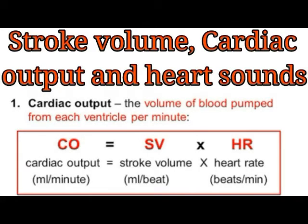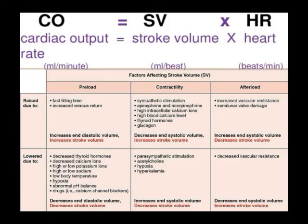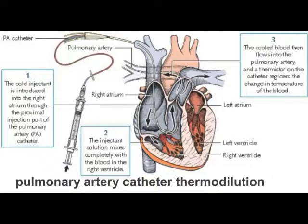Cardiac output is the volume of blood ejected by each ventricle per minute and is the product of stroke volume and heart rate. Cardiac output can be manipulated by alteration in heart rate or heart rhythm. Preload, contractility, and afterload also factor in. The thermodilution method using a pulmonary artery catheter is to date considered the gold standard method.